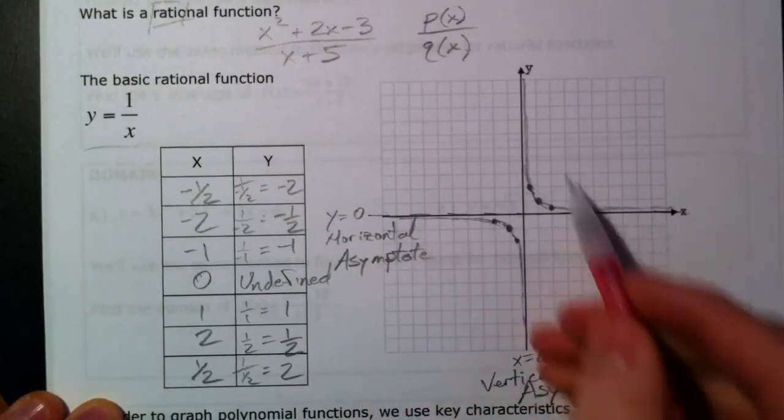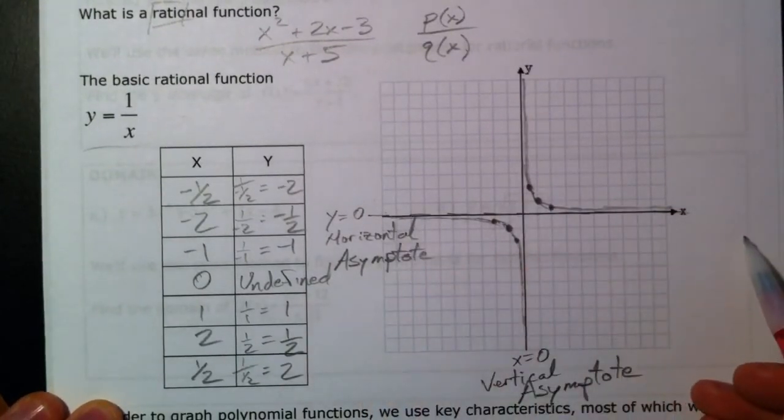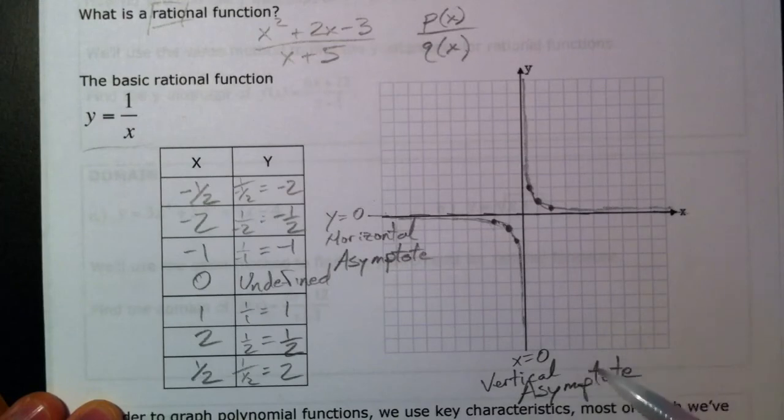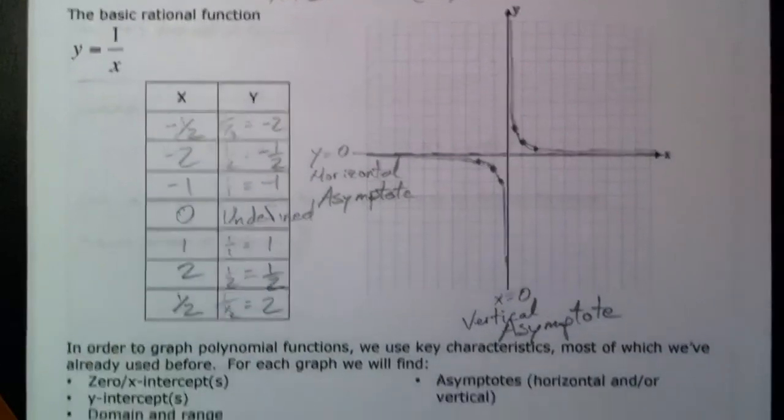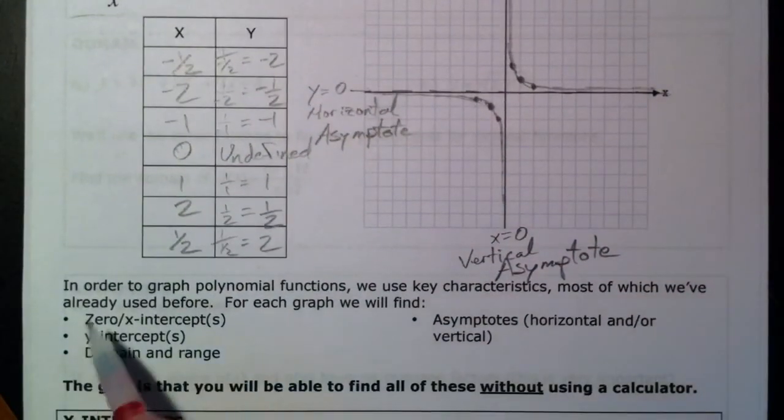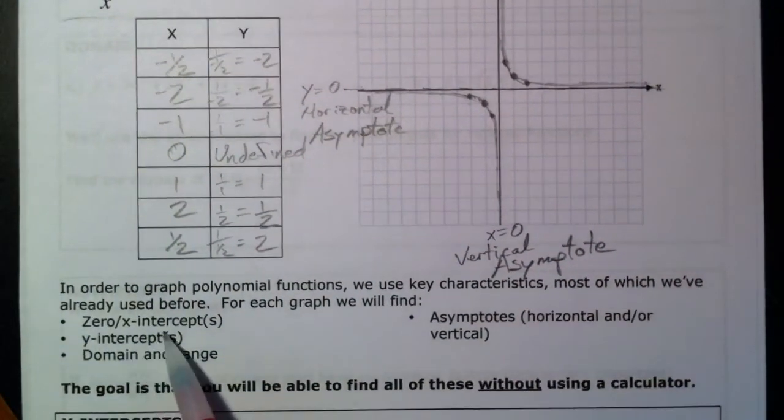And so we're going to have things like our horizontal and our vertical, and we're going to be able to come up with different ways of how to find those without having to plot points. And so different things we're going to find in the coming pages are going to be zeros and x-intercepts, y-intercepts, domain and range.